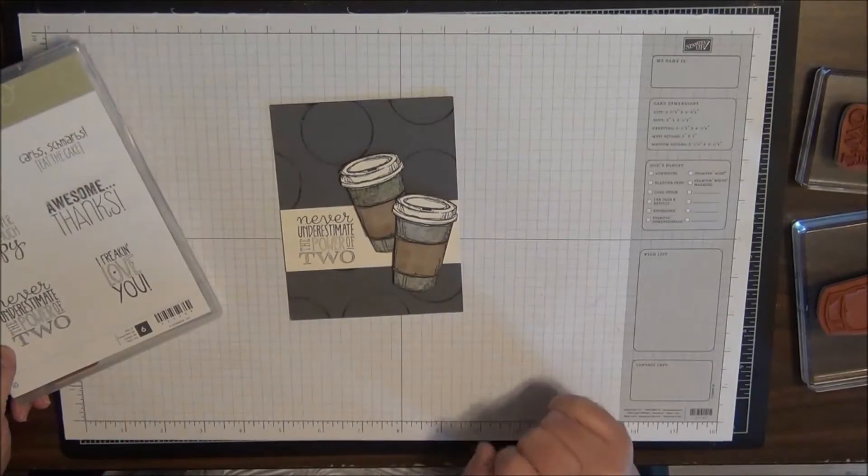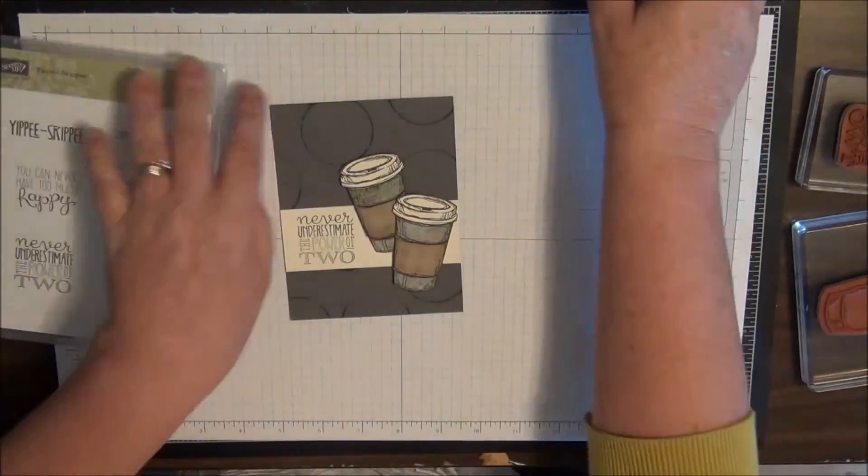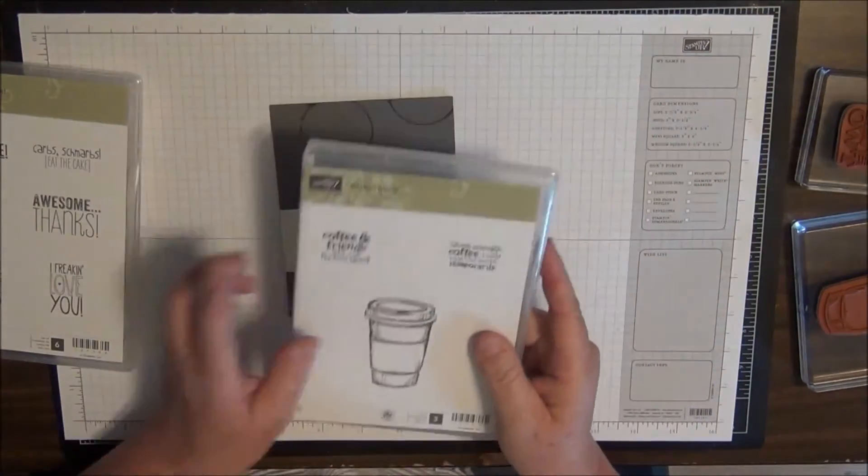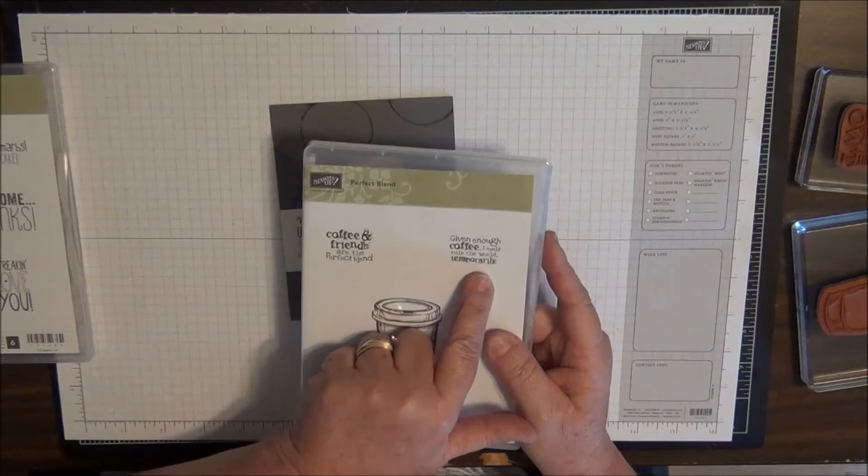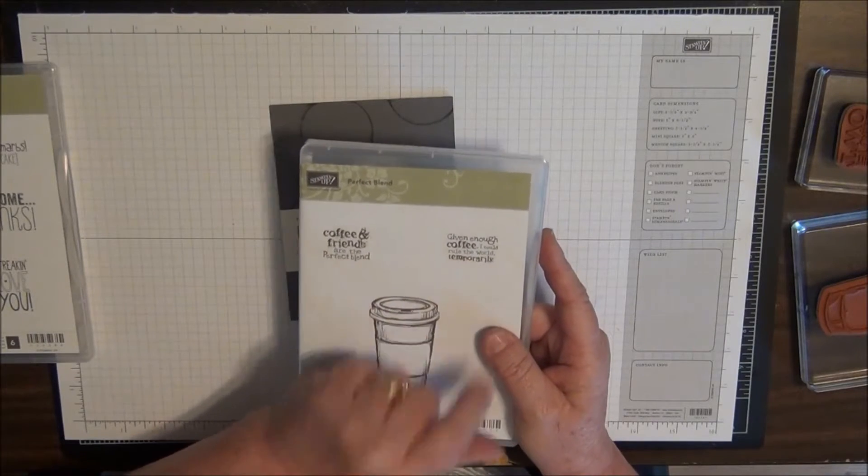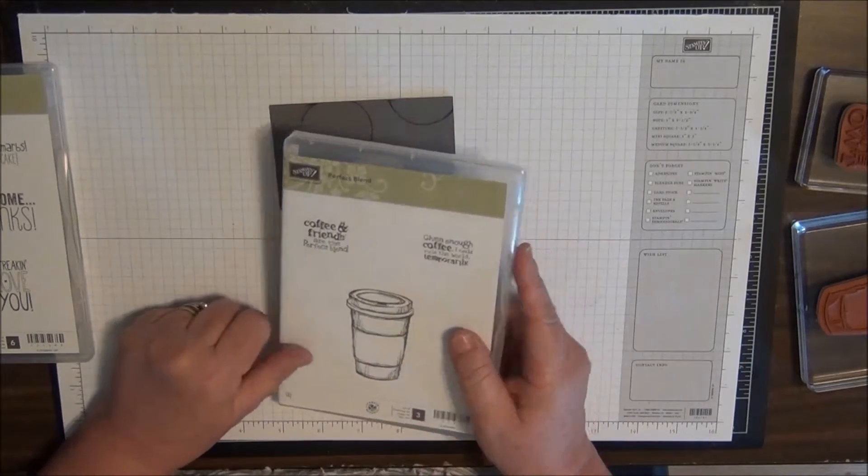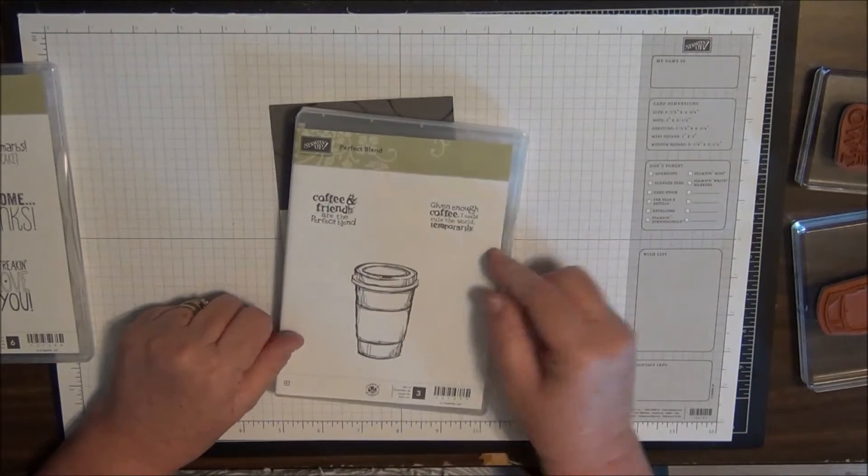I'm going to use this when I stamp my images. There are two images with the Perfect Blend: 'Coffee and friends are the perfect blend,' which is so true, and 'Given enough coffee I could rule the world temporarily.' I heard somebody say they were going to just cut off temporarily because they could rule the world if they had two cups of coffee.